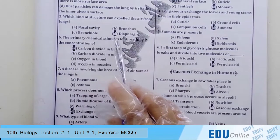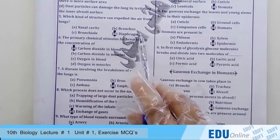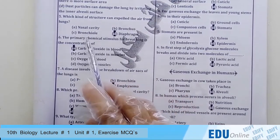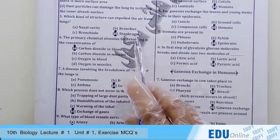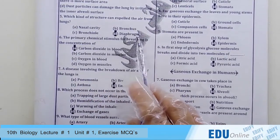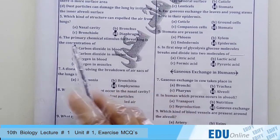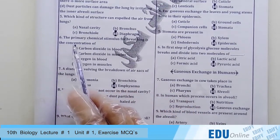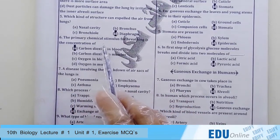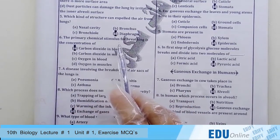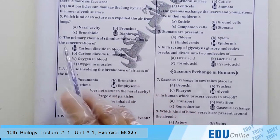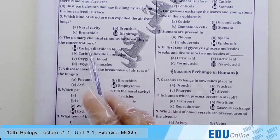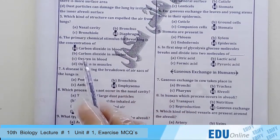Question number five: which kind of structure can expel air from the lungs — nasal cavity, bronchus, bronchiole, or diaphragm? The answer is diaphragm.